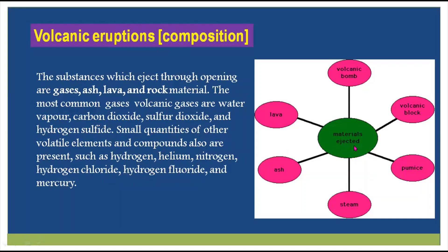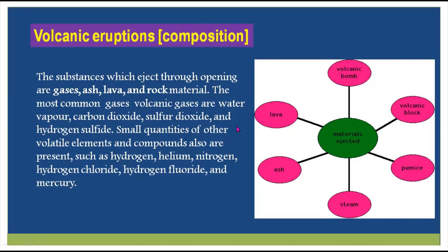You can see here the material which is coming to the surface through the vent. So we have lava, ash, steam, pumice, volcanic blocks, and volcanic bombs.